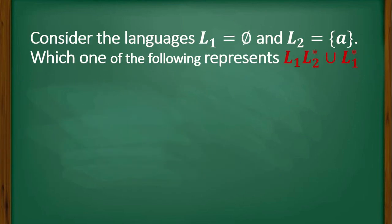Here is a question from TOC. Consider the language L1 is φ and L2 is {a}. Which of the following represents L1 concatenation with L2 star union with L1 star?